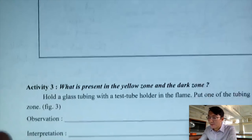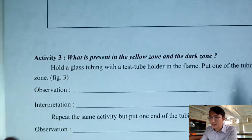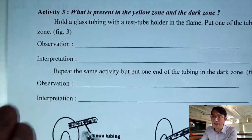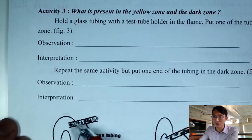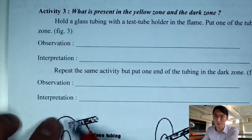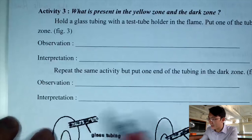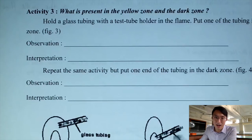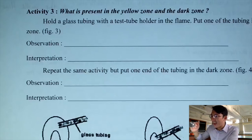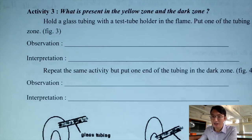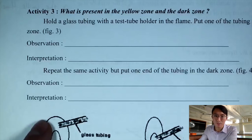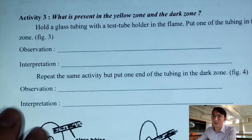For activity three, we use a glass tubing to try to get some gas or smoke out of the two zones — the dark zone and the yellow zone. We put the glass tubing first into the dark zone to see what kind of gas or smoke we can get. After that, we put the glass tubing into the yellow zone to find out what color of smoke we can obtain.